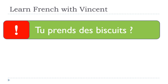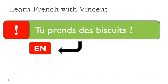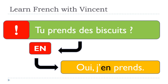Now the case when someone offers you biscuits — plural. Tu prends des biscuits? — Do you take some biscuits? We still use EN, but this time you don't put anything after the verb: Oui, j'en prends. You don't specify a quantity — it's like saying 'I take some.' So remember: UN → EN + UN at the end; UNE → EN + UNE at the end; plural DES → just j'en prends with nothing after.